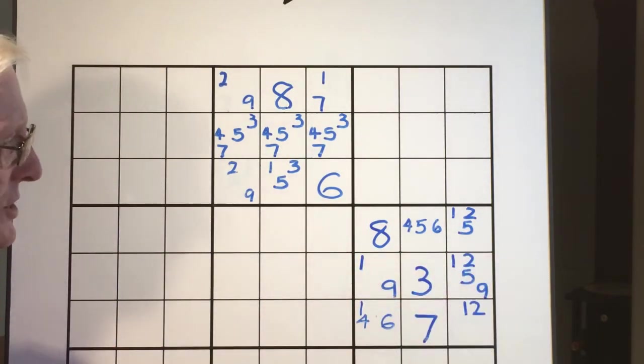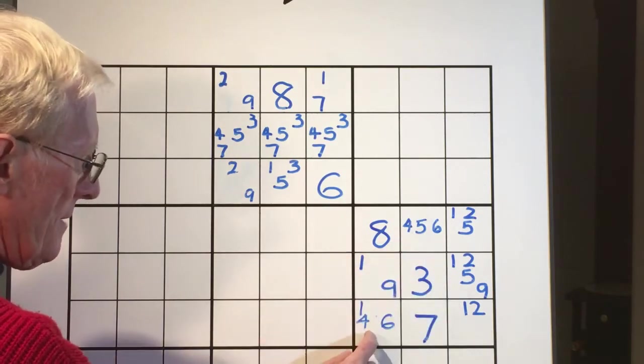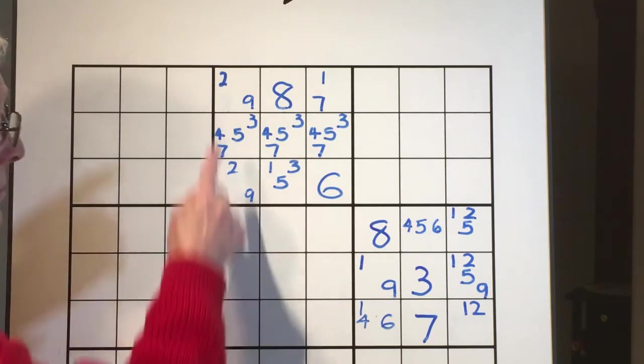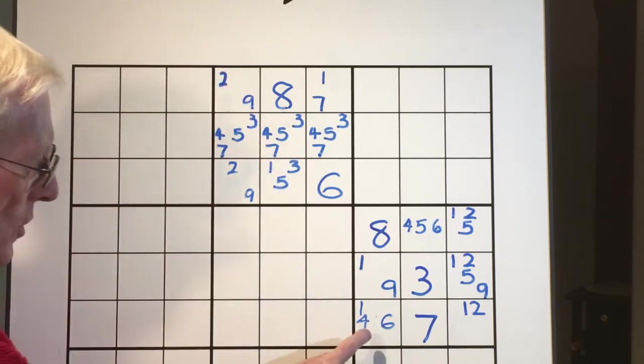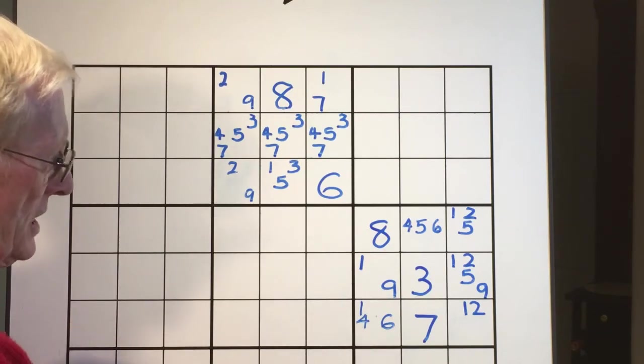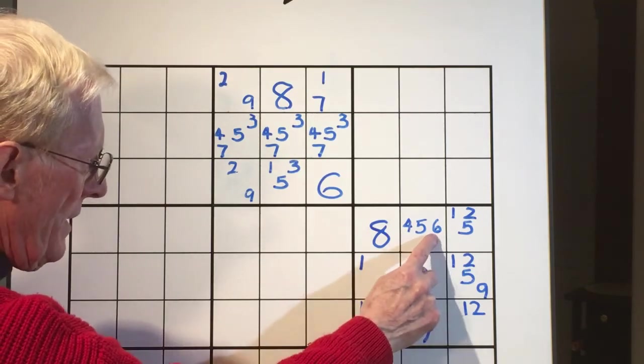Now, what are we left with? We're left with two cells here and here. Well, if you look really closely, similar to what we had up here, the four only goes there and there. It can only go in two places. The six can only go there or there.